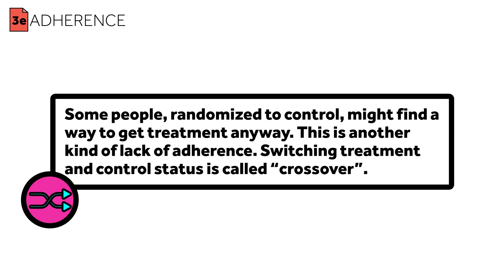Switching treatment and control status is called crossover. With some trials, adherence is difficult. Dieters, for instance, have a hard time keeping a diet for an extended period of time — and those are people who were so motivated they tried to make changes on their own. Can you imagine how hard it is for people randomly assigned to a diet to keep it? No wonder research in that area is so hard. For this reason, studies sometimes exclude people with a history of drug or alcohol abuse, or people who live far away, or people who have a history of mental health problems. Refusing certain participants will make a difference with respect to generalizability, but those concerns must be weighed against others.